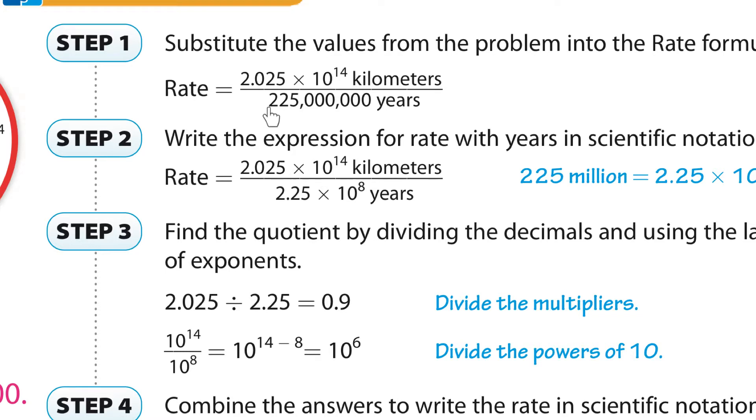So what do they do here? They have that staying the same. And then we turn this into scientific notation. And now we can divide these factors here. Divide them. That's 0.9. And then here we can just subtract. Using our exponents rules, we can subtract those exponents to 14 minus 8 is 6. And then we put them together. 0.9 times 10 to the 6th power.